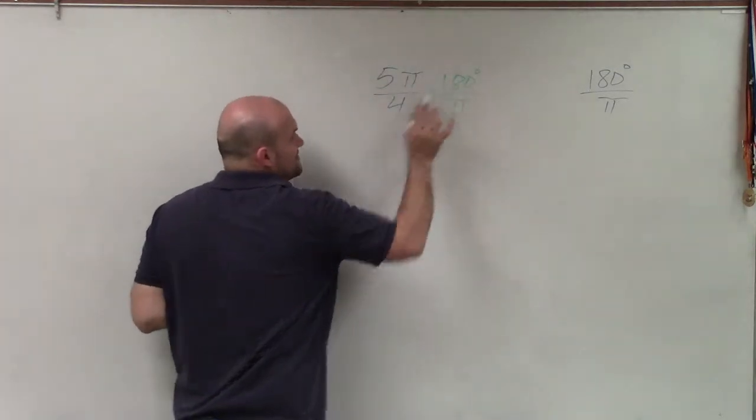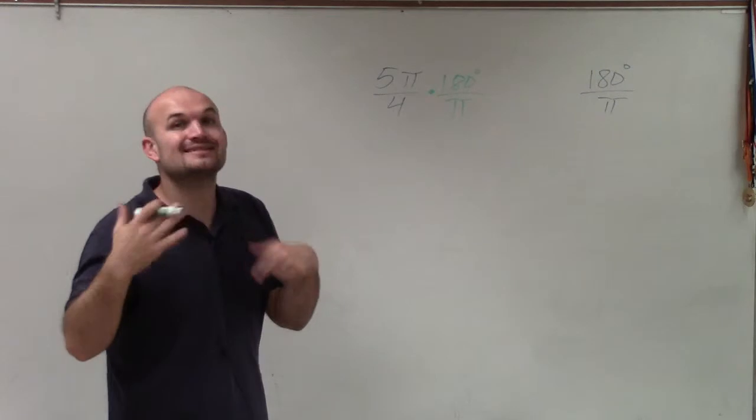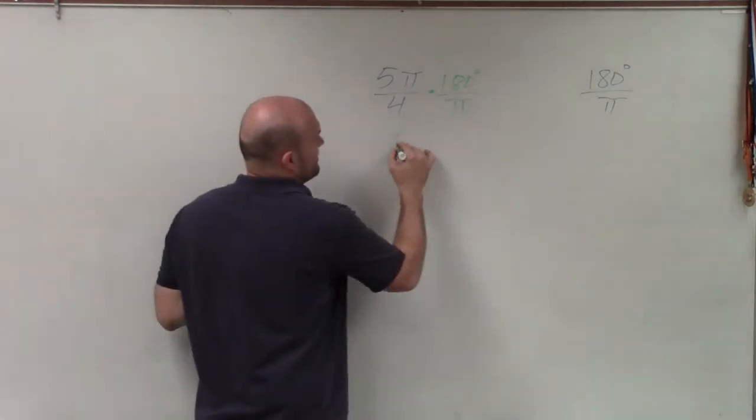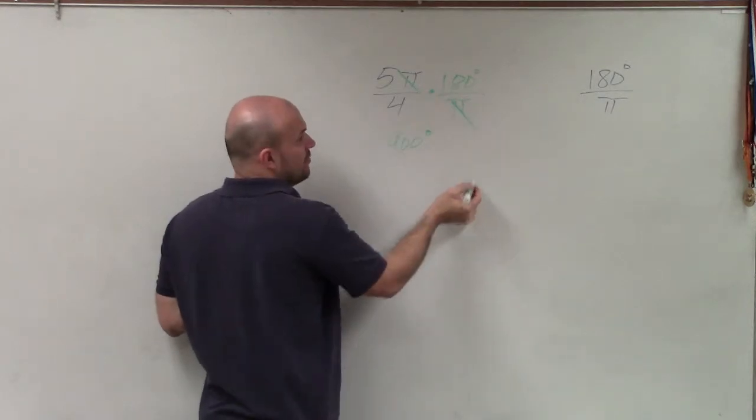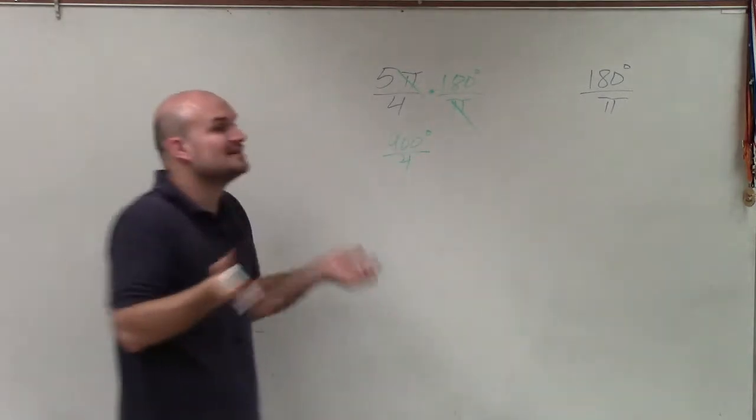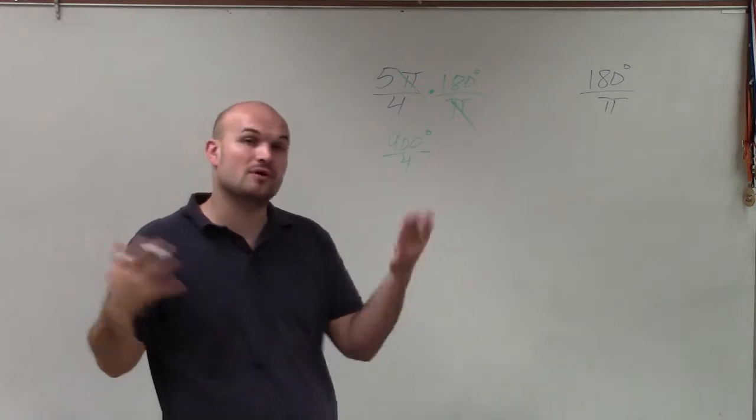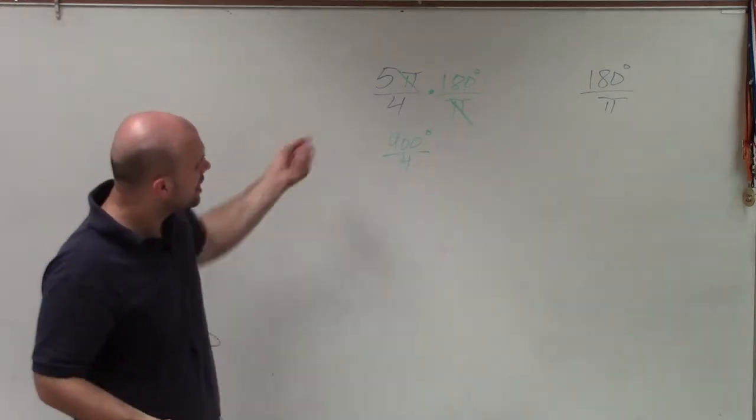Then I need to multiply 5 times 180, which carried the 1 is going to be 900. So now I have 900 degrees. The pi's divided into 1 over 4. So now I just need to take 900 degrees divided by 4, and that's going to be my answer in degree form.